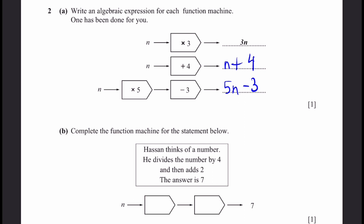Part b: complete the function machine for the statement below. Hassan thinks of a number. He divides the number by 4 and then adds 2. The answer is 7. So first he divides n by 4 and then adds 2 — that's the function machine.